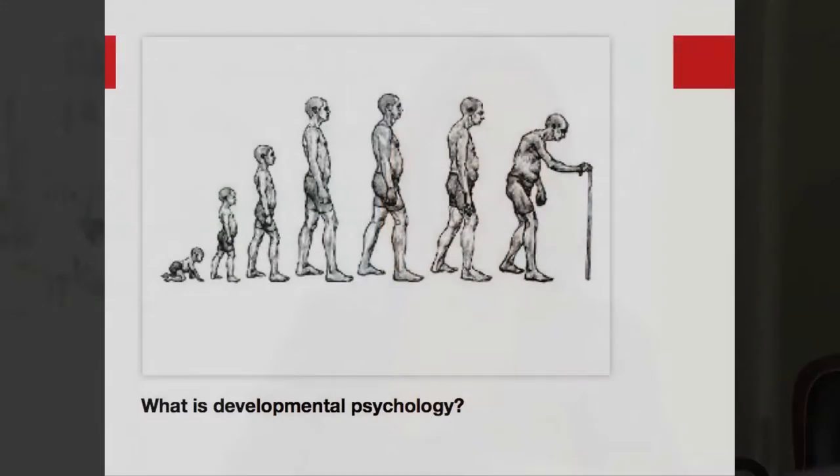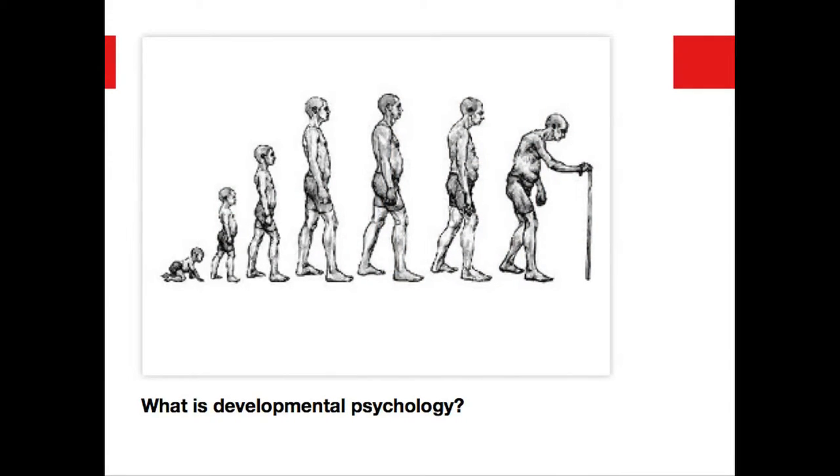Why do kids like peekaboo so much, or games that are repetitive? Why do they watch the same TV shows over and over again? There are some good reasons why children like repetitive events and television shows and books. And what about atypical development — children with autism spectrum disorder or conduct disorders? What makes their development different from typical development, and what can typical developmental research tell us about atypical development? Those are just a few examples of the questions we ask, from the brain up to groups of people across and within generations.